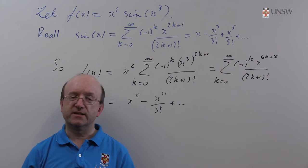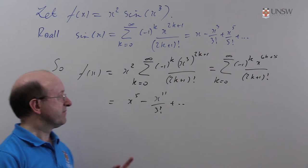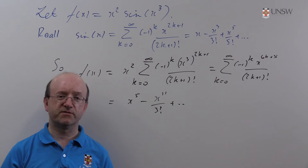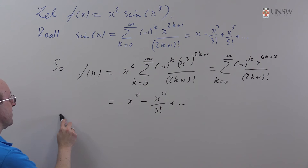Okay, now the next thing we want to do is check that x=0 is a stationary point, but that's immediate from the series here because the leading term is x^5. That's the first time there's a non-zero derivative, at the fifth one, so clearly the first derivative is zero because there isn't an x term here.